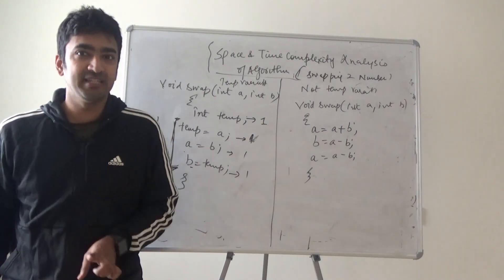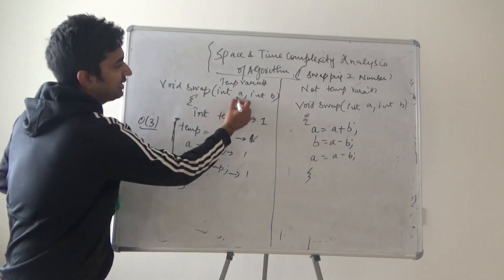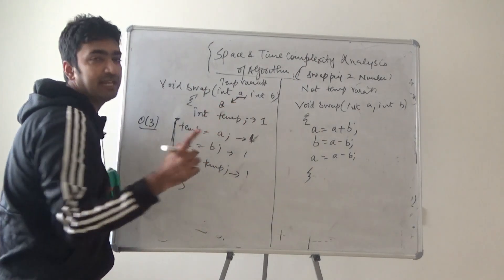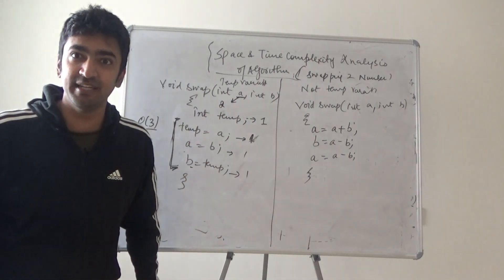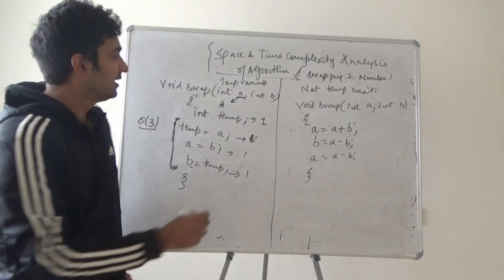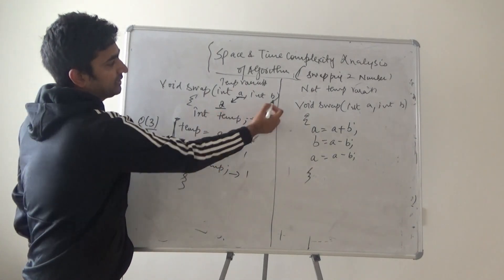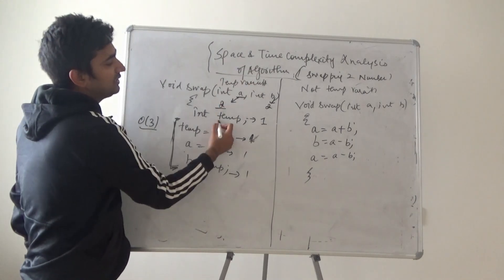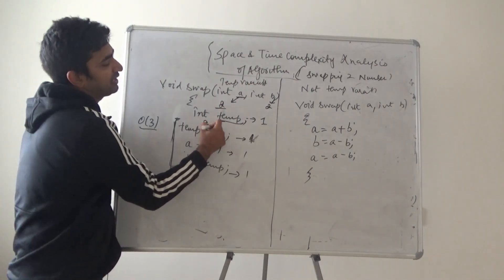Now, let's come with space. So, a is taking, if I'm taking the integer space as universal of two bytes, integer have taken two bytes, int b you have taken two bytes. Similarly, int temp you have also taken two bytes.